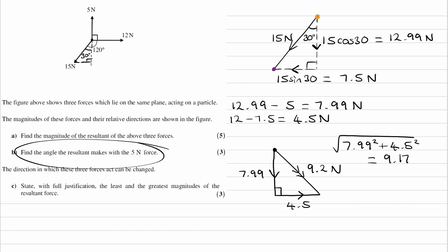Then we want to work out the angle that the resultant force makes with the 5 Newton force. So the 5 Newton force is a vertical force, so that's going in this direction. So then we want to work out the angle between that force and this force, so that would be this angle here.